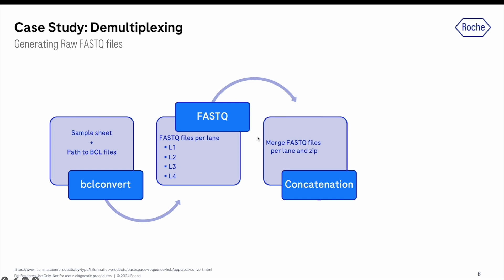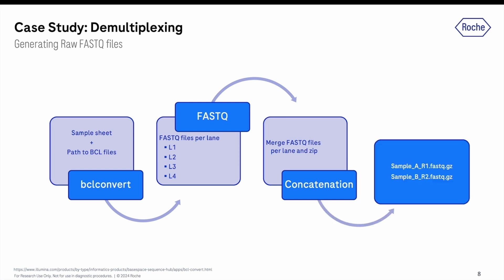We create a FASTQ file per sample. FASTQ files, as mentioned, are a text-based sequence file format that stores both raw data and quality scores. For a single run, one FASTQ file is created for each sample per flow cell lane, but for a paired-end run, two FASTQ files are created for each sample for each lane. In our example we are working with paired-end, so we have two FASTQ files created for each sample.